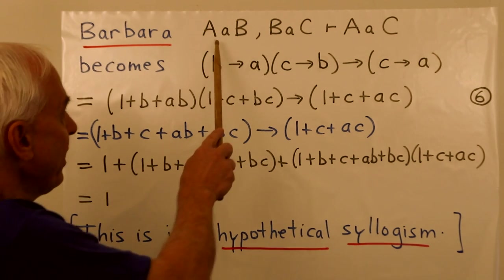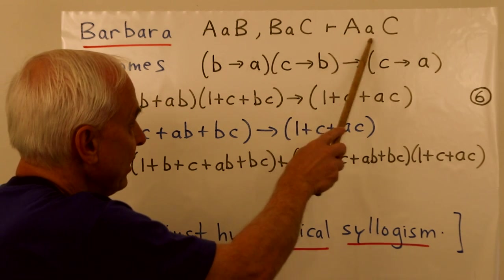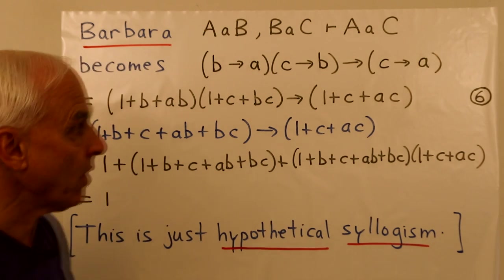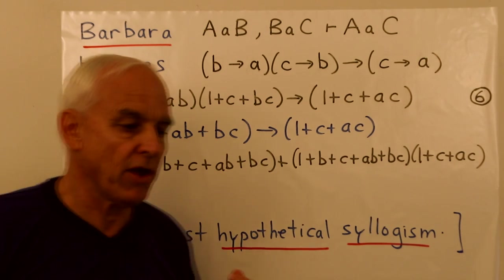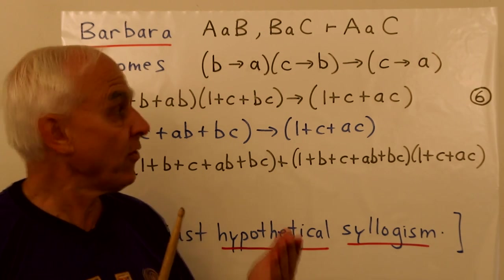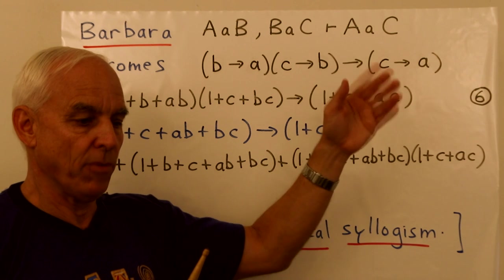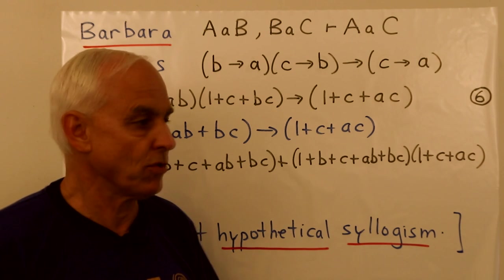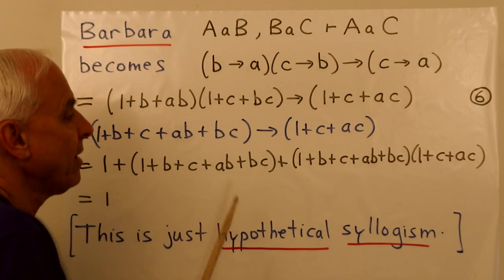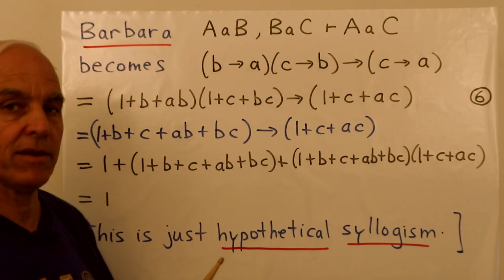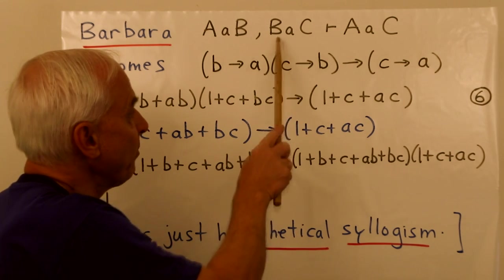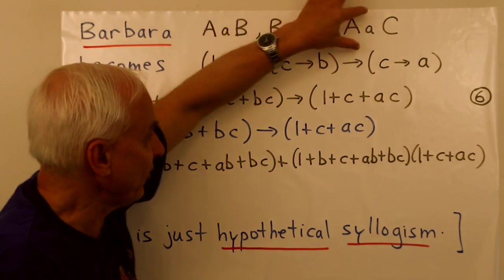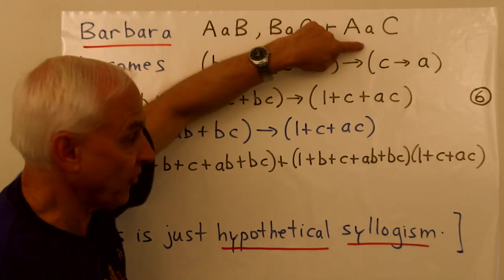So let's have a look at Barbara. Here's Barbara. A little AB, B little AC, A little AC. If every B is an A and every C is a B, then every C is an A. Now, what we are going to do is we're going to take those two kinds of forms, the A's and the E forms, and convert them into propositional logic statements as I've just showed you. So A little AB is converted to B implies A. This one here is converted into C implies B, and this one is converted into C implies A. And then the form of this is that we have these two as the premises, and this is the conclusion.